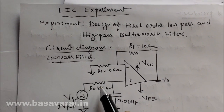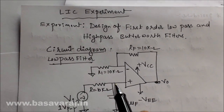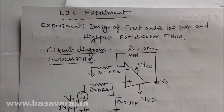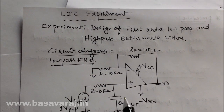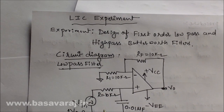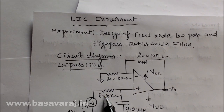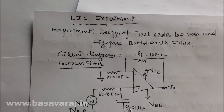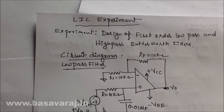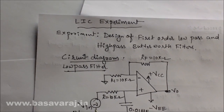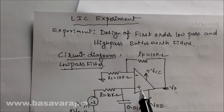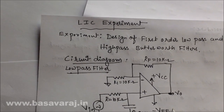This circuit consists of a single RC stage — one resistor and one capacitor at the input stage. We call it a first order low pass filter. If it contains two stages of RC network, we call it a second order low pass filter. The input signal is connected to the non-inverting terminal of the op-amp, so this is a non-inverting configuration.